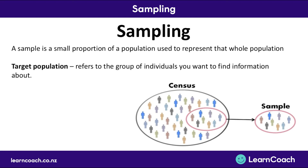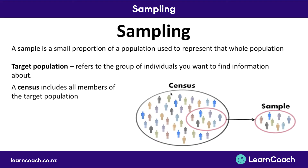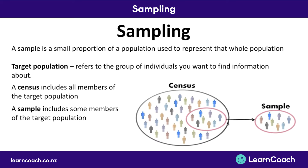Going over a few definitions: a target population refers to the whole group of individuals you want to find information about — for example, the whole of New Zealand. A census includes all members of the target population. You might have heard of the New Zealand census, which is a survey that every New Zealander answers. A sample includes just some members of the target population.